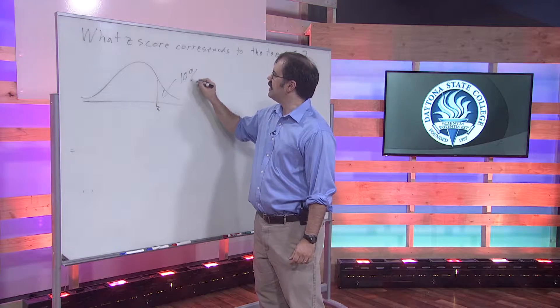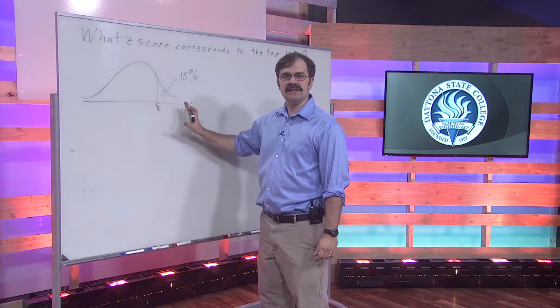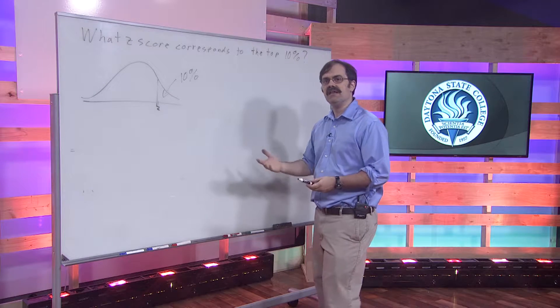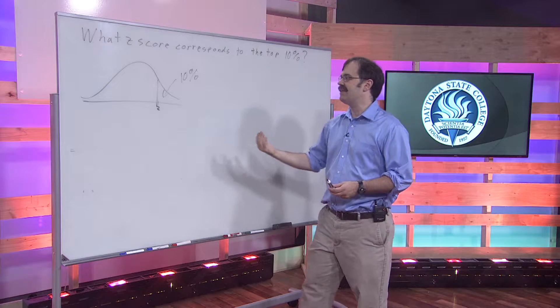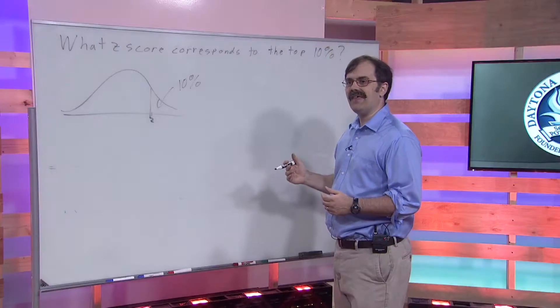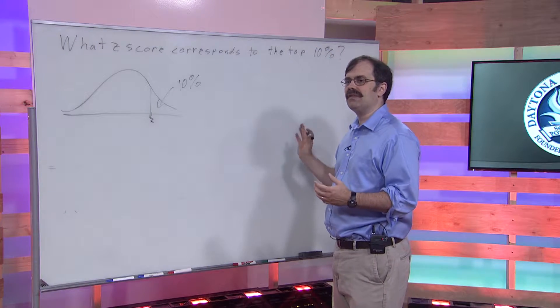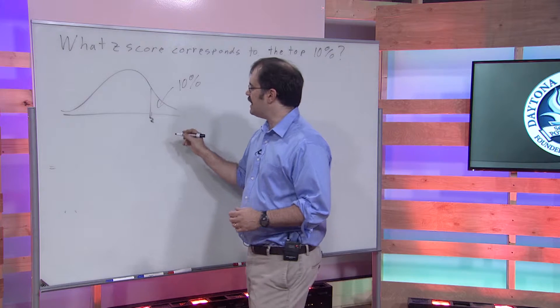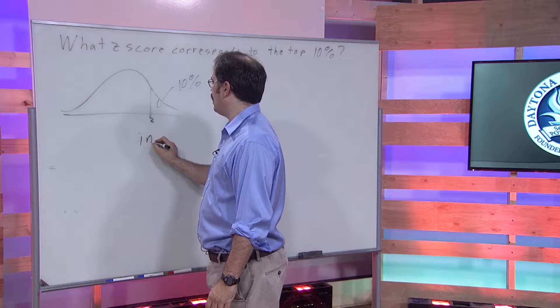there's only 10% that is above this z-score. If you randomly select something, there's only a 10% chance of having a z-score that is above this value. How do we find that?